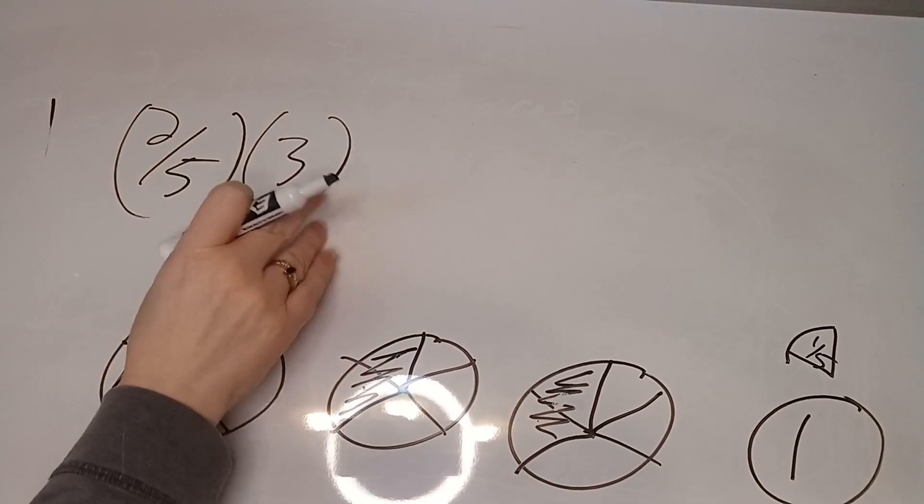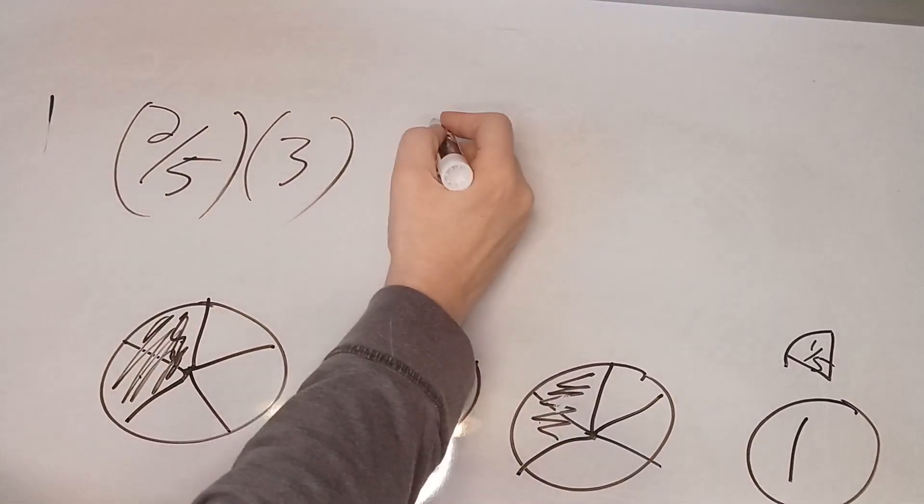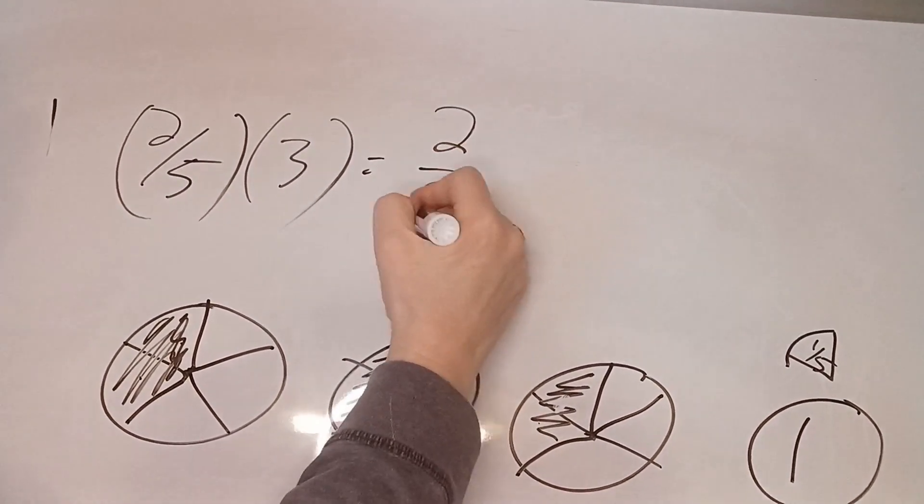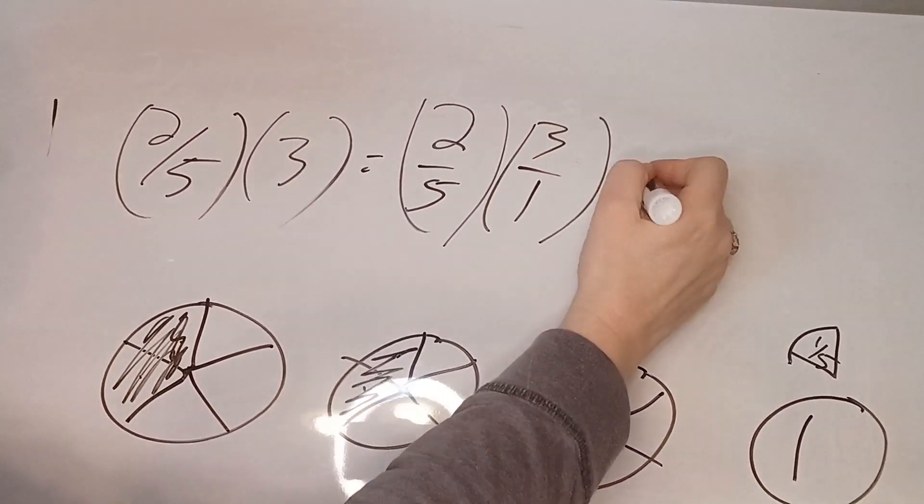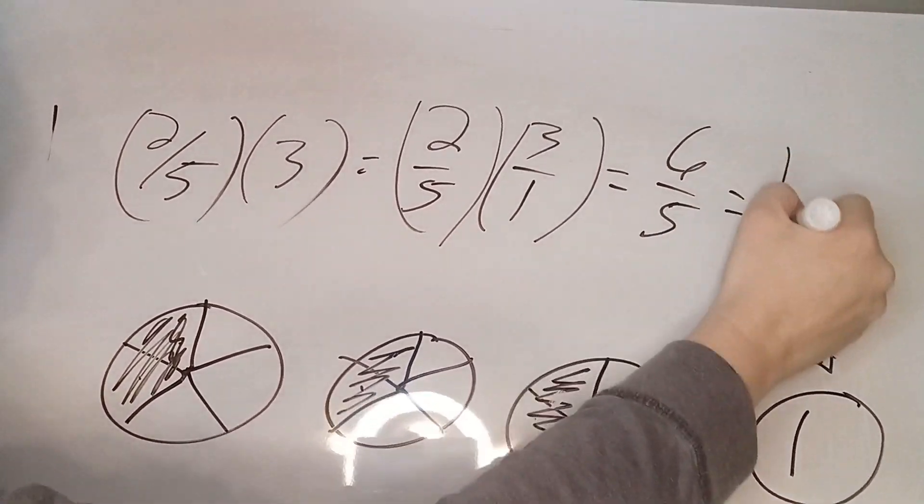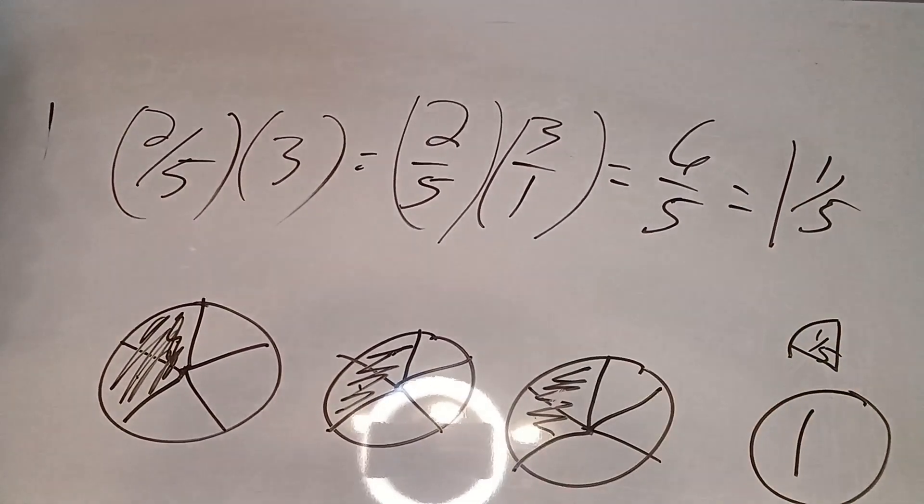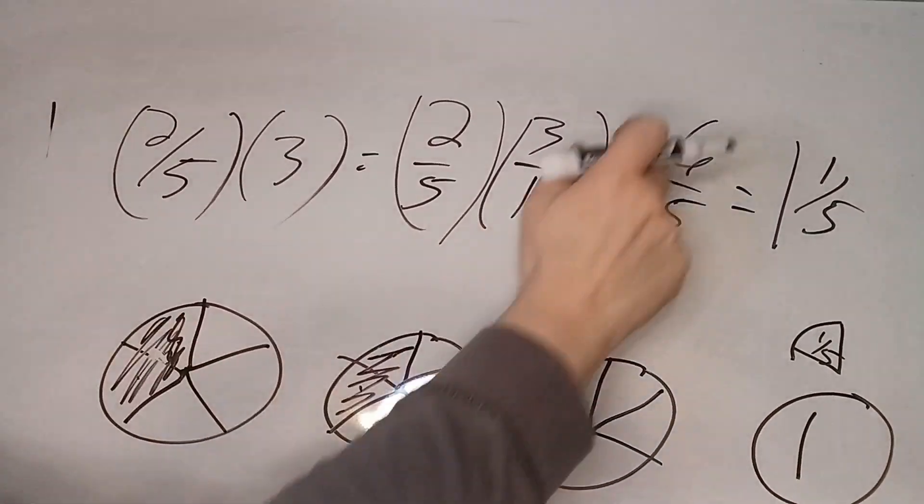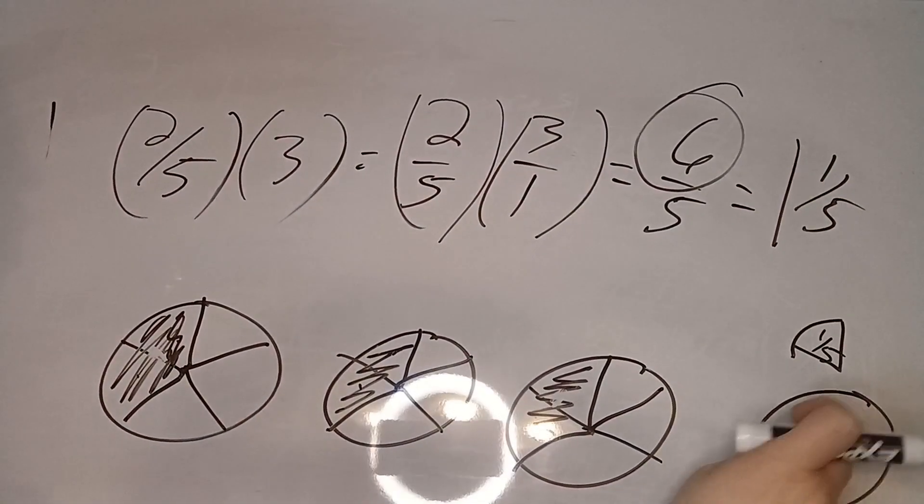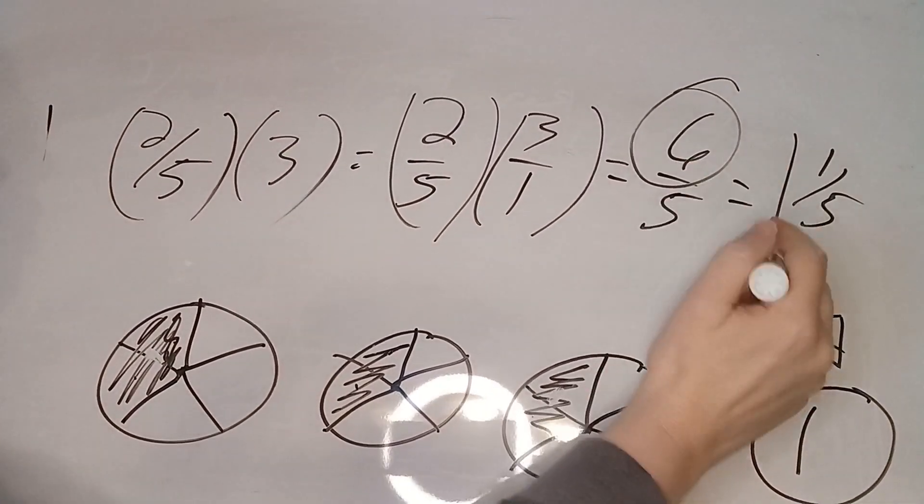Mathematically we have two over five times three over one gives us six fifths, which is one and one fifth. It's the same thing. Okay? We got six pieces here, six pieces here. One and a fifth, one and a fifth.